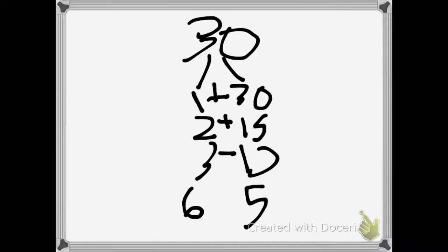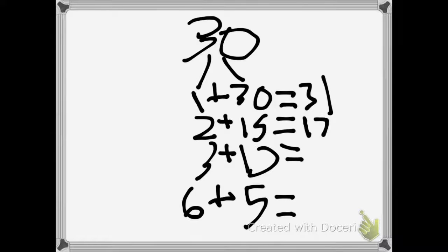How do any of these add up to 11? 1 and 30 is 31, 2 and 15 is 17, 3 and 10 is 13, 6 and 5 is 11. That is equal to 11, so we can use that.